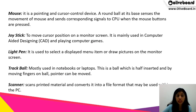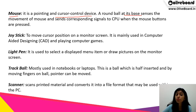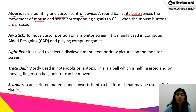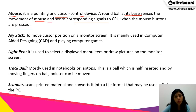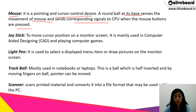Next is the mouse. It is a pointing and cursor control device. There is a round ball at its base that senses the movement of the mouse and sends corresponding signals to the CPU when the mouse buttons are pressed. That's how we use a mouse by clicking the various things that we want to.